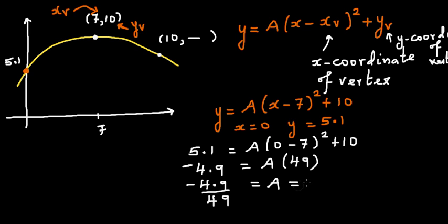So A is minus 0.1. So you can see the equation is y equals minus 0.1 times x minus 7 the whole squared plus 10. So we need to answer two questions: what's the y-coordinate when x is 10? And secondly, imagine this is a part of a rocket or a ball. When it was thrown, it was thrown at a height of 5.1 meters.